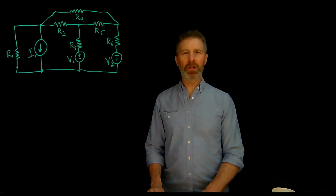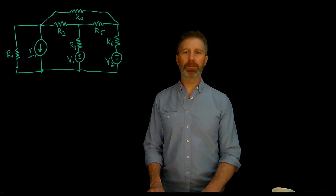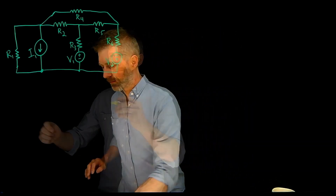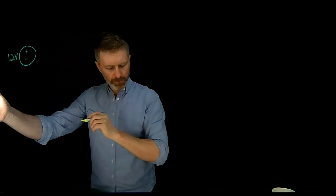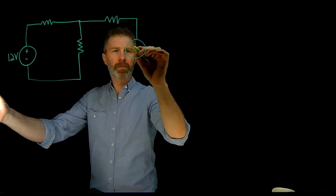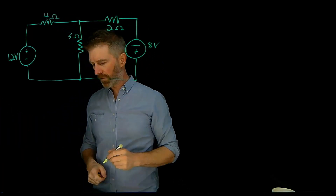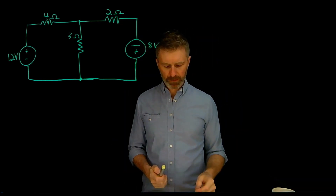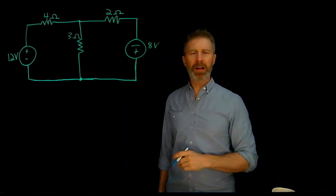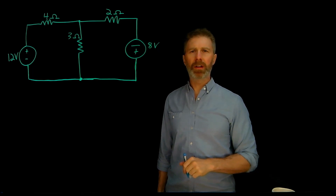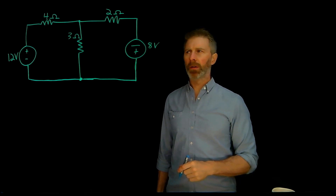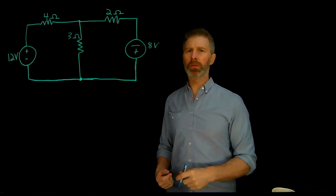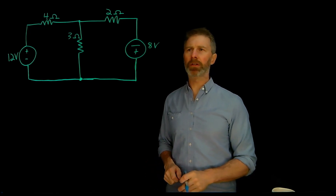Probably the best way to learn the mesh current analysis method is to go through an example and outline the steps as we go. Here's the circuit that we're going to analyze with the mesh current analysis method. It's a fairly simple circuit and one that we could use other methods for — superposition comes to mind — but we're going to use mesh analysis on this simple circuit just to see what the process is.